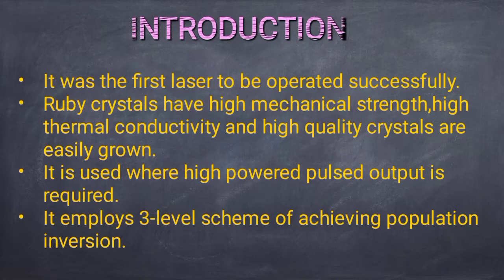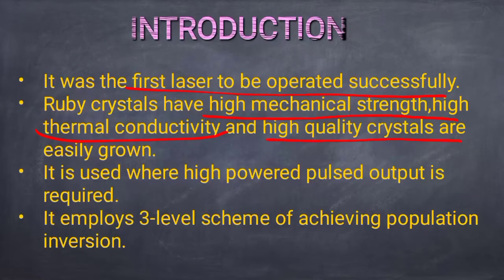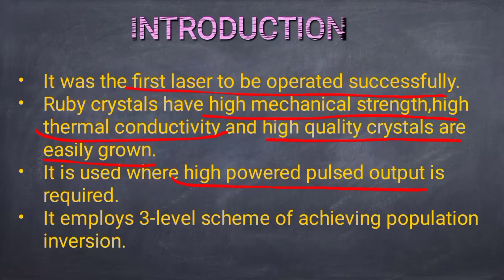The ruby laser was the first laser to be operated successfully. The ruby crystal in the ruby laser has high mechanical strength, high thermal conductivity, and very high quality crystals are grown. Ruby laser is used at places where high power pulsed output is required.